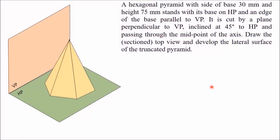In this video I will discuss how to draw the orthographic projection of a section pyramid and also explain how to develop its lateral surface. I have taken an example of a hexagonal pyramid with a base side of 30 mm and height of 75 mm. It stands with its base on HP, and one edge of the base is parallel to VP.